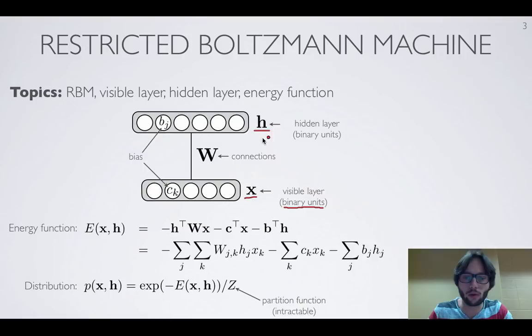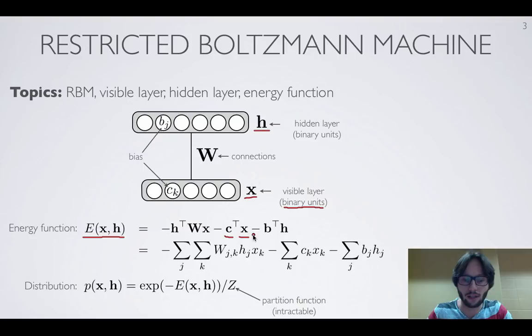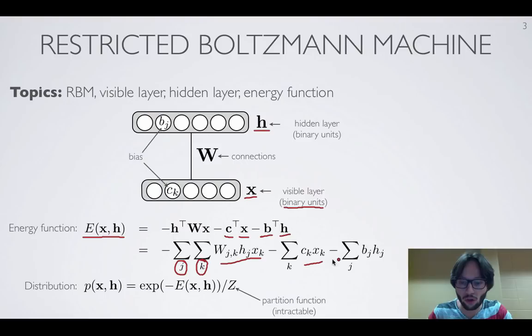The restricted Boltzmann machine defines a distribution over x involving latent variables corresponding to binary hidden units. We first define an energy function, which is linear in both h and x: it's the product of the hidden unit vector h, a connection matrix W, and x. It also involves a bias vector c times x and a bias vector b times h. We can also write this in scalar form with explicit sums over hidden units and inputs.